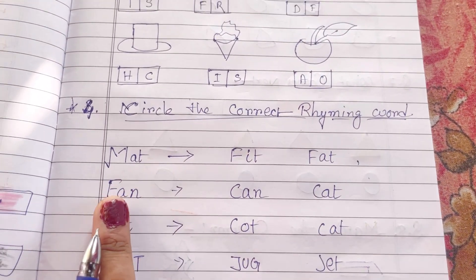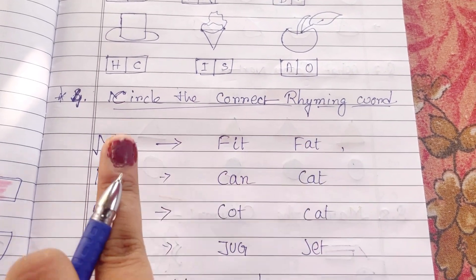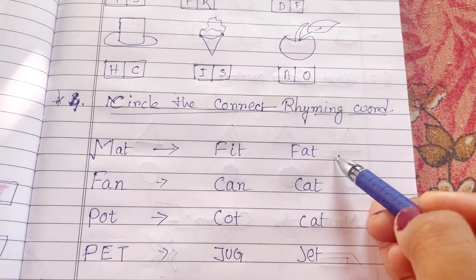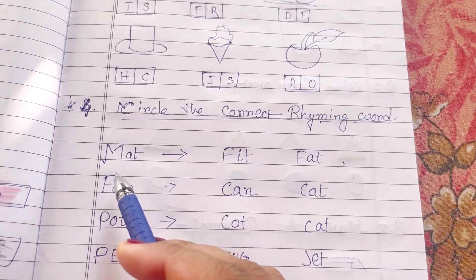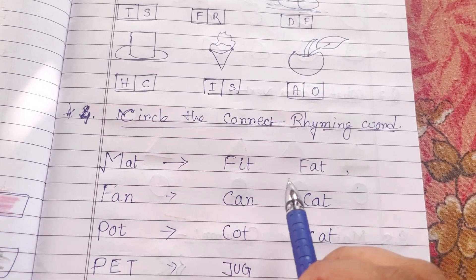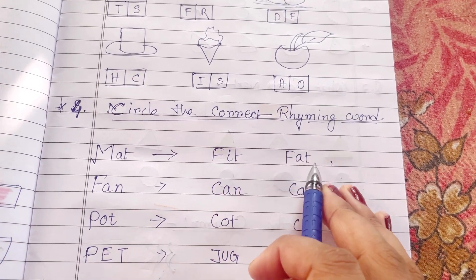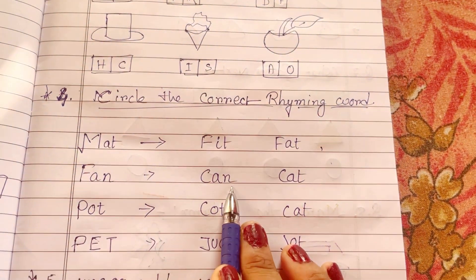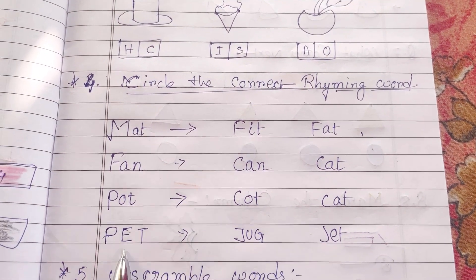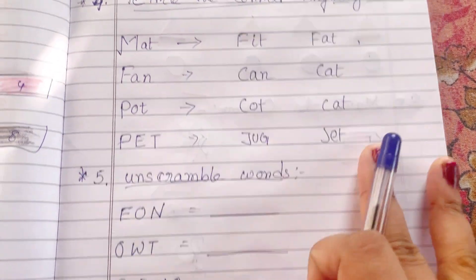Agla worksheet hai 'Circle the correct rhyming word'. Yahan pe maine ek word likha hai aur yahan pe do alag words likhe hain. Jo bhi iska rhyming hoga usse circle karna hai. Jaise mat - rhyming word kya hota hai? Mat-fat, to fat circle karna hai. Fan-can, pot-pet, jet - is tarike se karna hai.